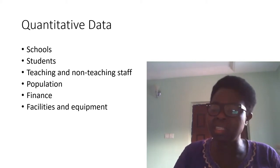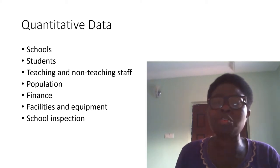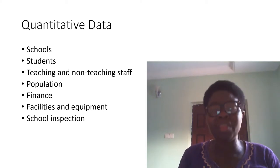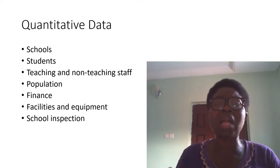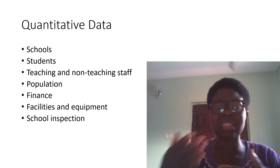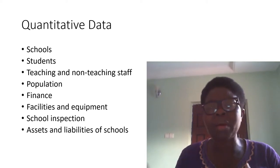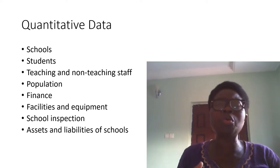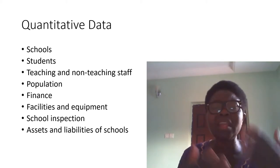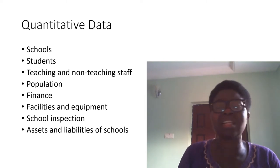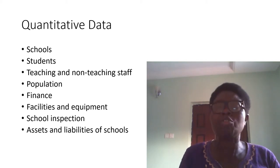School inspection is equally quantitative data because you need to know the number of times you carry out an inspection in a particular season, and that helps determine whether what you're doing is right. We also talk about the assets and liabilities of schools. You need to identify them — what is an asset could be a liability at one point, and what is a liability could be an asset at another.